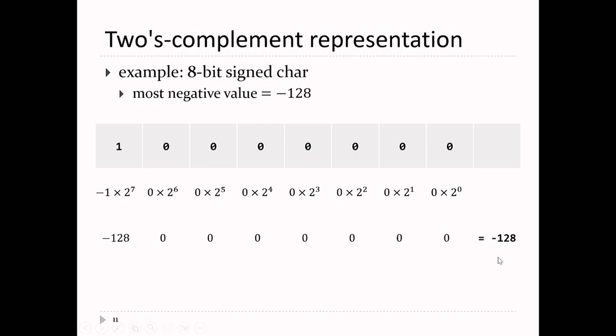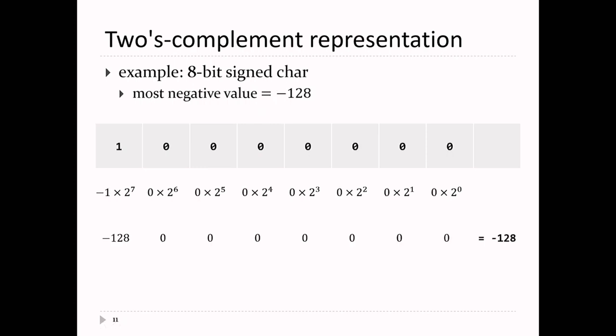Notice 128 is bigger than 127. So the range of the signed integer values is asymmetric about zero — there's always one more negative value than there are positive values.